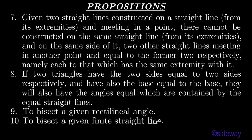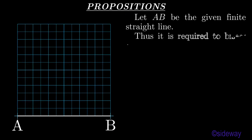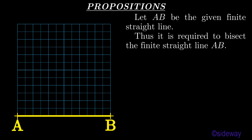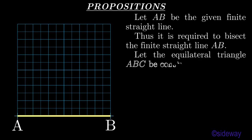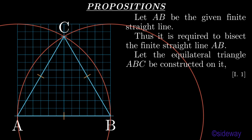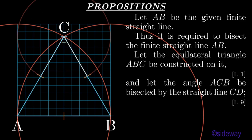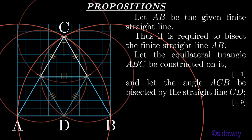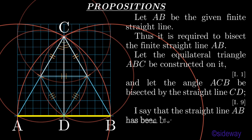Proposition 10. To bisect a given finite straight line. Let AB be the given finite straight line. Thus it is required to bisect the finite straight line AB. Let the equilateral triangle ABC be constructed on it, by Book 1 Proposition 1. And let the angle ACB be bisected by the straight line CD, by Book 1 Proposition 9. I say that the straight line AB has been bisected at the point D.